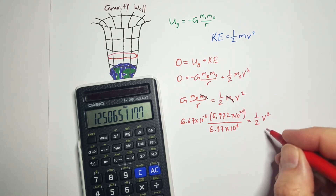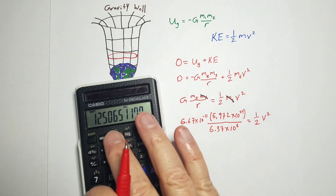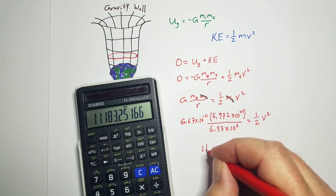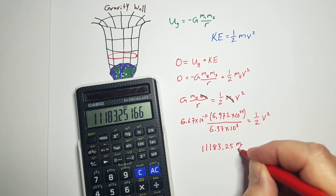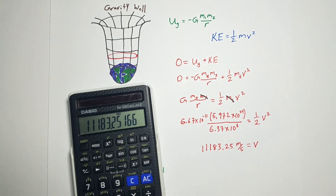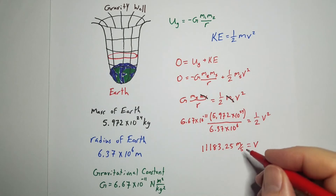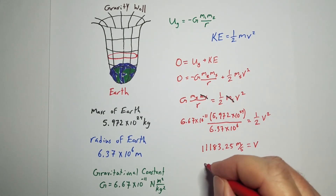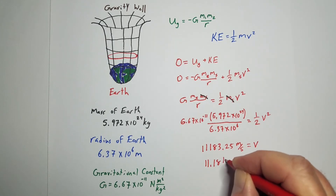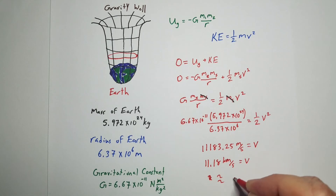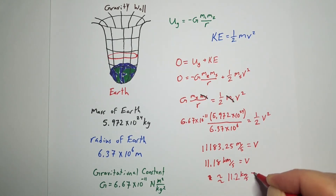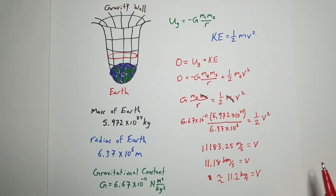But that is v squared, so I want to take the square root of that. When I do, we get 11,183.25 meters per second, which is equal to the velocity you need to escape Earth's gravity. Now let's make it a little bit nicer and change that to kilometers: so that will be 11.18 kilometers per second in order to escape Earth's gravity. A lot of times people say that's pretty much close to 11.2 kilometers a second, which is the standard value you get in most books and on the internet. And that's how you can find the escape velocity of the Earth.